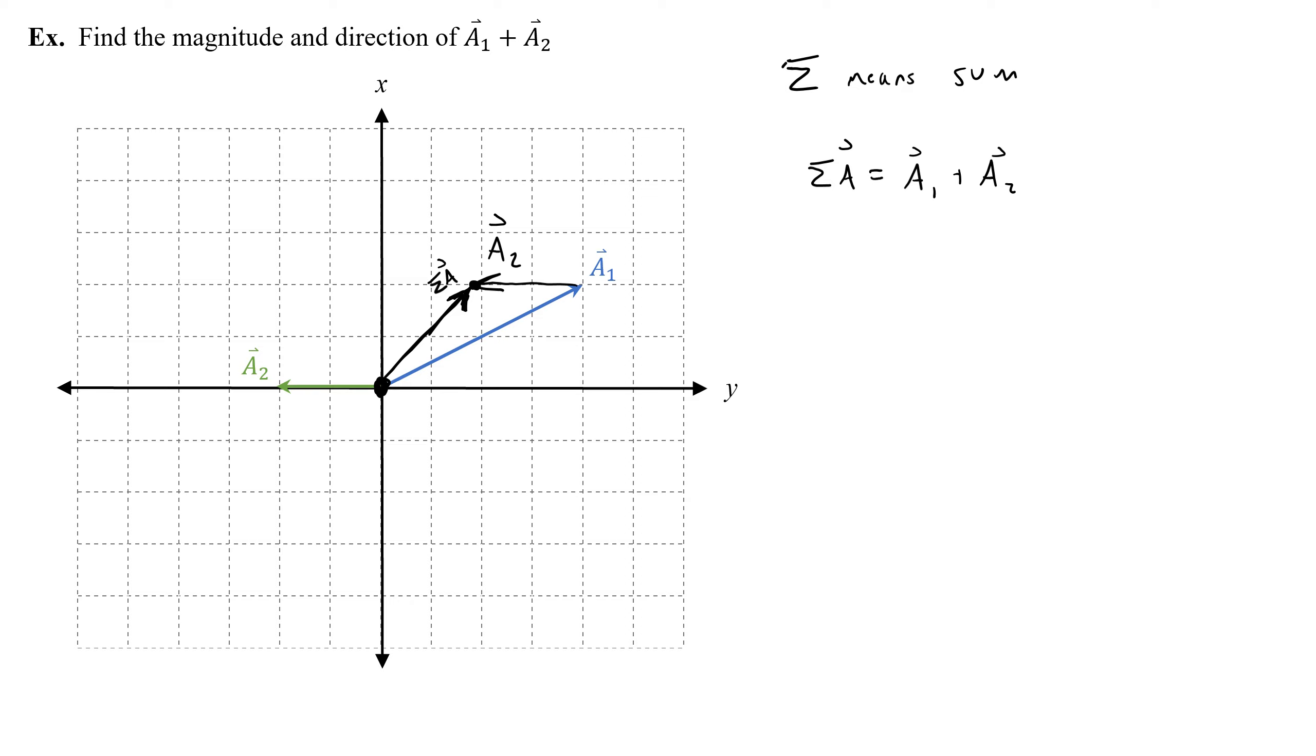So to find the magnitude of this vector, sigma a, let me write that there, theta. I would need to do tangent inverse of the y component over the x component, which I'm going to call sigma ay and sigma ax. So the y component and the x component are going to be positive 2 and positive 2. So when I find the angle, it should give me 45 degrees. So hopefully that looks pretty clear.